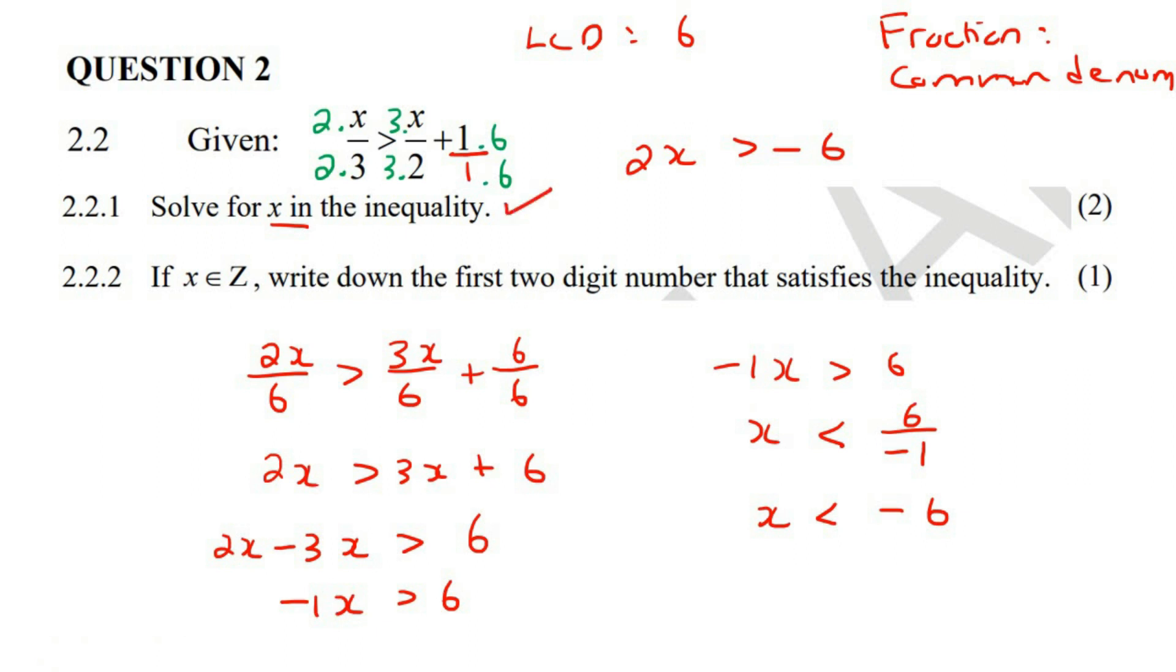Now it says, if x is an element of z, remember the z means integer. What is an integer? An integer is any number like minus 3, 7, 8, 0, 10, minus 4. It's all of the negatives and positives, but it's not numbers with decimals and things like that. So it says, if x is an integer,